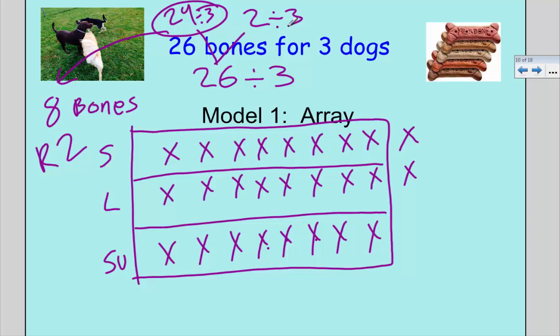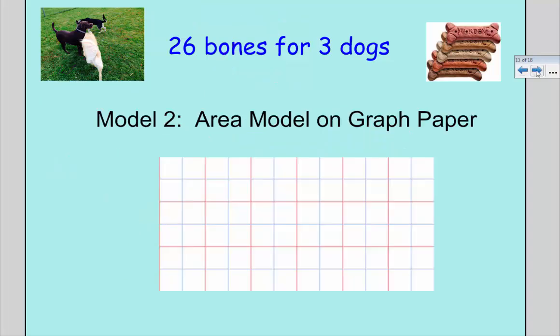Let's look at another way we can do this problem. I could do a more sophisticated array, an area model. I'm going to use that same idea that each one of my dogs represents a row. This one will be Scoop, this row of boxes will be Lucy, and this row will be Sully. I'm going to use skip counting as my tool here.